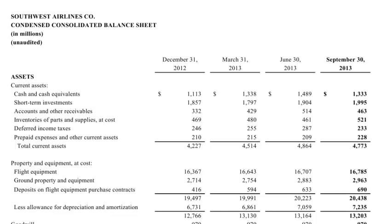Now that we have an understanding of the income statement, let's turn to the balance sheet. I've loaded up Southwest Airlines' balance sheet here and we'll take the same approach as we did with the income statements. We'll first look at the layout of the balance sheet, the sections and the summary lines, and then we'll come back and do a little bit more detailed analysis on some of the different line items.